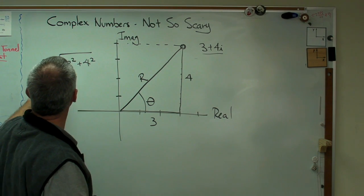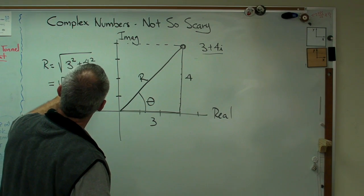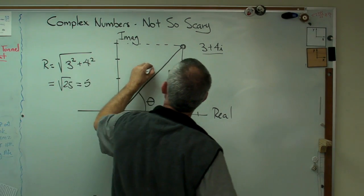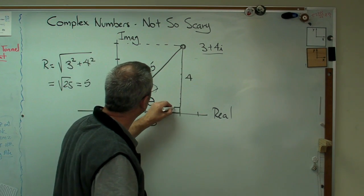Well, that's 9 plus 16 is 25. The square root of 25 must be 5. So, the radius right there is 5. That's 3, 4, 5 right triangle. You've seen those before.